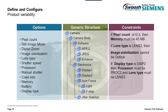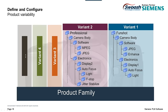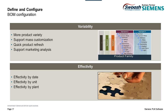Here we've defined some constraints for the various camera options and applied them to the generic product structure. All of these help define a product family from which you can support frequent enhancements, derivatives, and niche offerings. Here you can see two specific product variants — a FunShot camera and a professional camera. With BOM configuration in TeamCenter, you can manage variability, offer more product variety to meet a broader range of customer requirements without driving up costs, increase market share, and product revenue through mass customization. BOM configuration also helps you manage effectivity by date, unit, plant, and much more to ensure a 100% accurate BOM all the time.